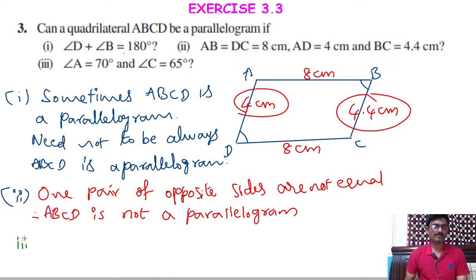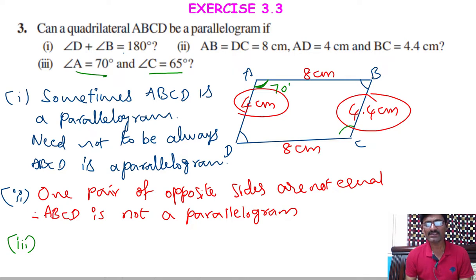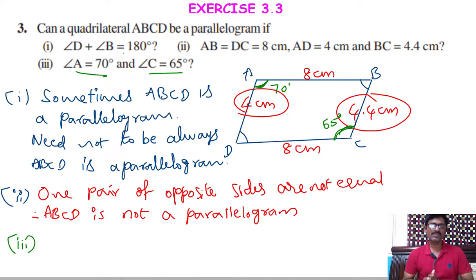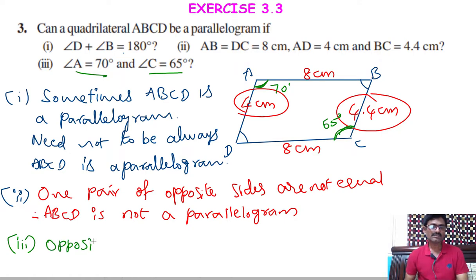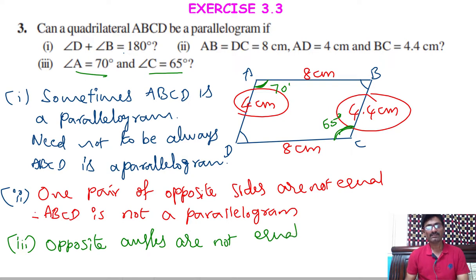Third condition: angle A equals 70 degrees and angle C equals 65 degrees. These are opposite angles. If it were a parallelogram, opposite angles must be equal. Here 70 is not equal to 65, so the opposite angles are not equal. Therefore ABCD is not a parallelogram.